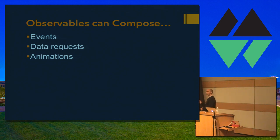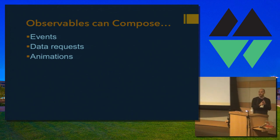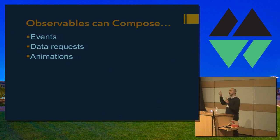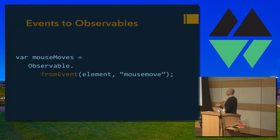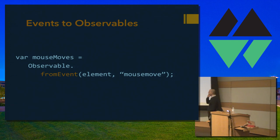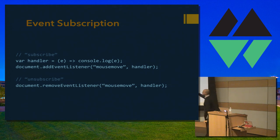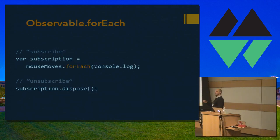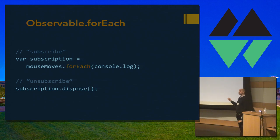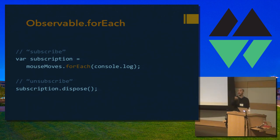Observables are so powerful for building UIs because they can compose three of the most elemental things of any UI: events, asynchronous data requests, and animations. Observable can model each of these and allow you to combine them all using just a few functions. If I want to convert a legacy event — like addEventListener — to an Observable, it's as simple as calling Observable.fromEvent. When you subscribe to an event you're really traversing it with forEach. When you call forEach over an Observable, it returns a subscription object, and if you want to unsubscribe you just call dispose on it.